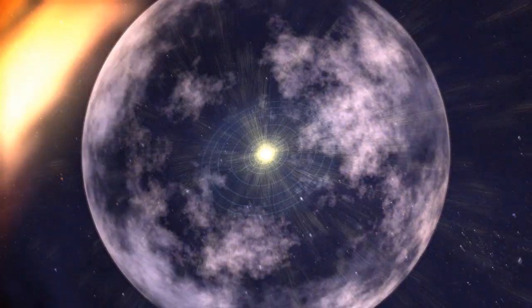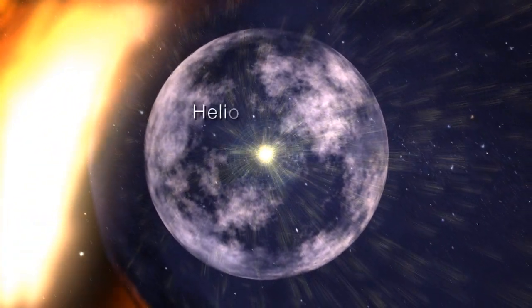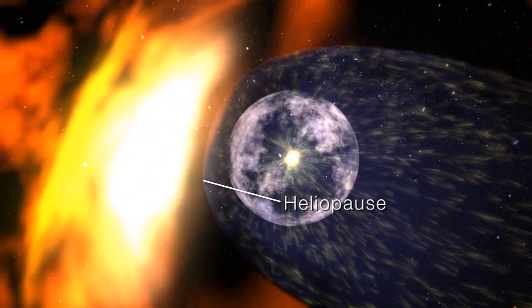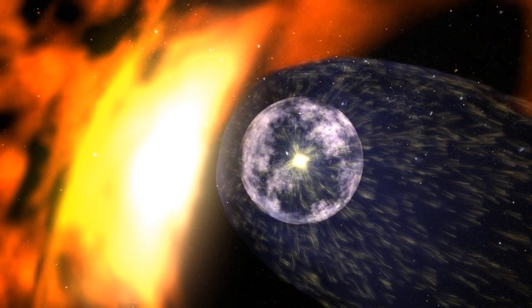The solar wind pushes out against this galactic wind, forming a bubble called the heliosphere. The outer boundary is called the heliopause and is blown into a teardrop shape by the galactic wind.